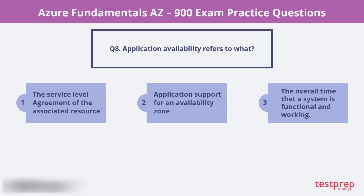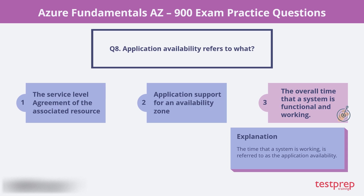Question 8. Application availability refers to what? Is it the service level agreement of the associated resource, an application support for an availability zone, or is it the overall time that a system is functional and working? The time that a system is working is referred to as the application availability. Thus the correct answer is option 3.